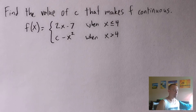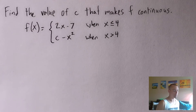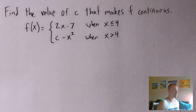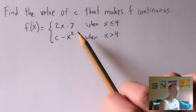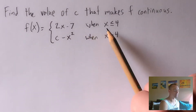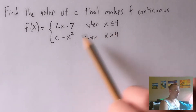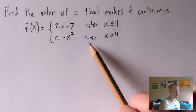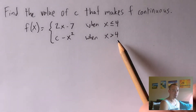This is the example I'm going to use: find the value of c that makes f continuous, where f is a piecewise function using 2x minus 7 whenever x is less than or equal to 4, and c minus x squared when x is greater than 4.